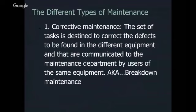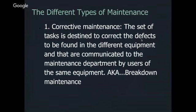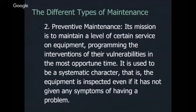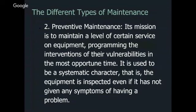Understanding the different types of maintenance. The first type is corrective maintenance — a set of tasks destined to correct defects found in equipment, communicated to the maintenance department by users. This is also known as breakdown maintenance. Preventive maintenance's main mission is to maintain a certain service level on equipment, programming interventions at the most opportune time. The equipment is inspected even if it has not given any symptom of a problem.